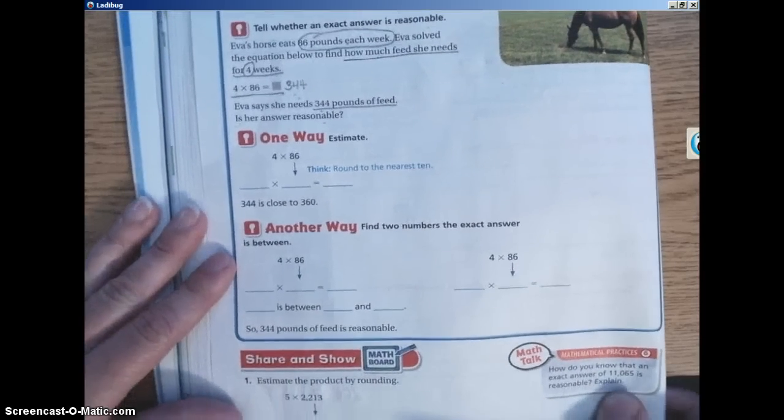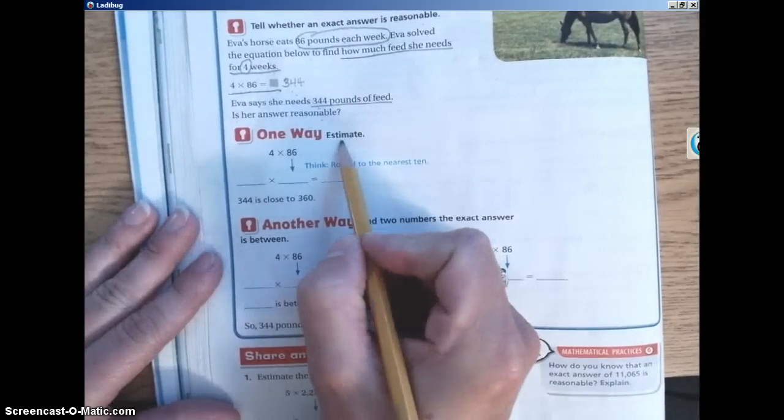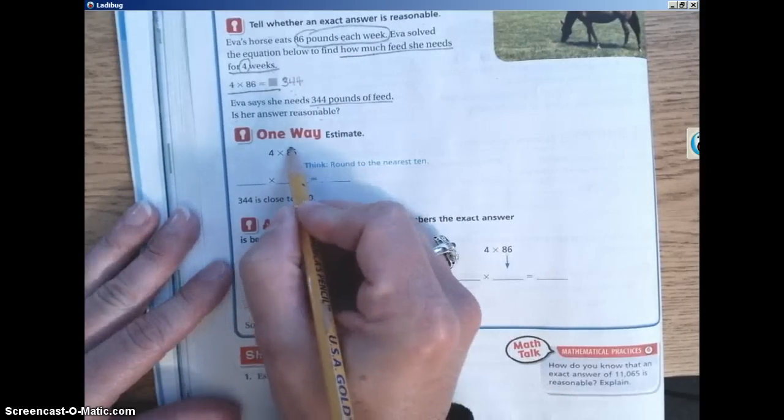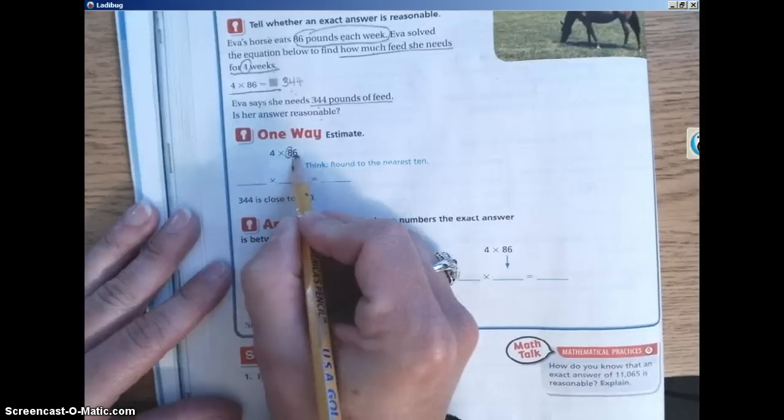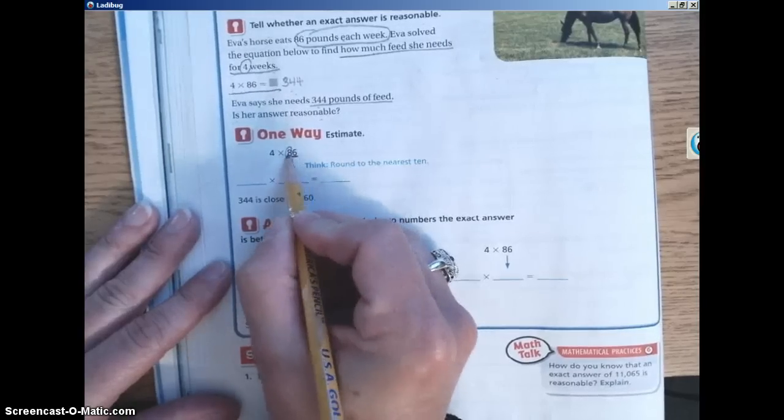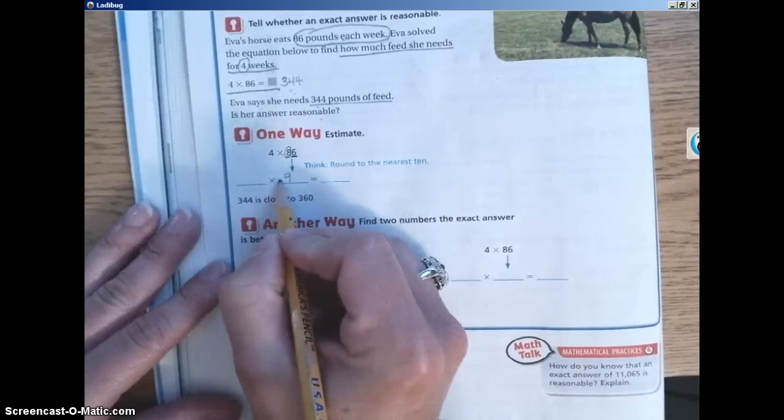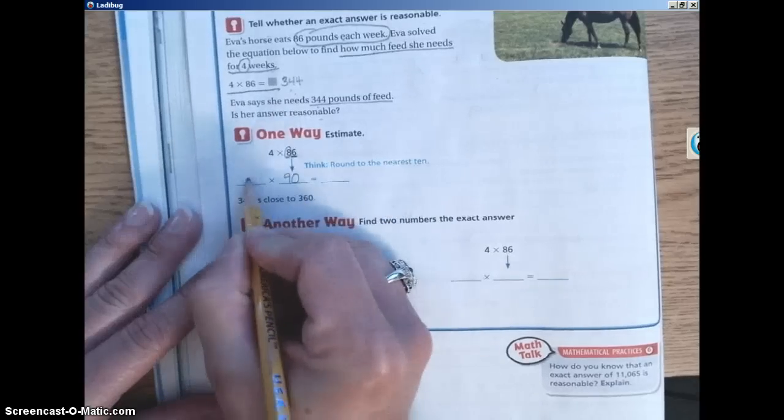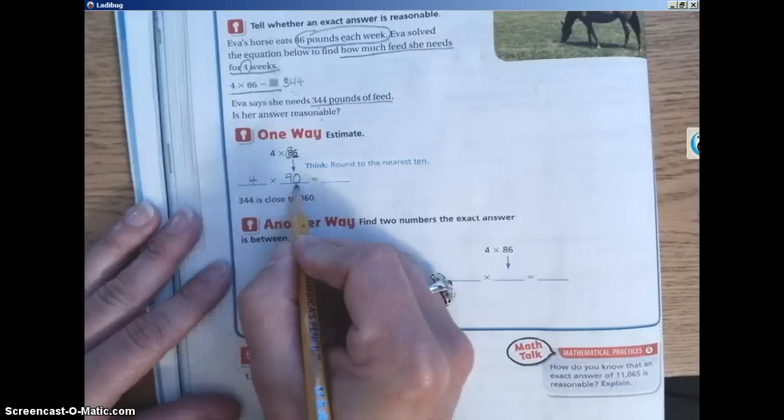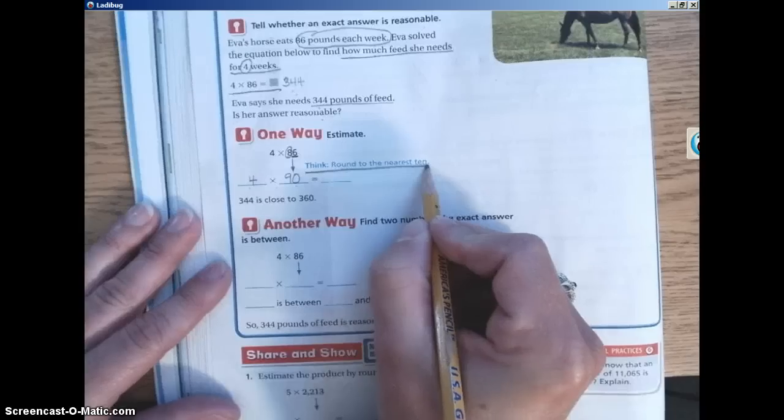One way that we can check for reasonableness, again, we're using estimation. So we're going to round to the nearest 10. We look at the 8. That's the number that we're rounding. Look next door at the 6. If it's greater than 5, we let the number soar. So our 8 is going to become a 9. Anything in front of it we record. There's nothing here. Anything after it turns into a 0. So for our estimate, we have 4 times 90. It even says here, think, round to the nearest 10. Pay attention to your clues.